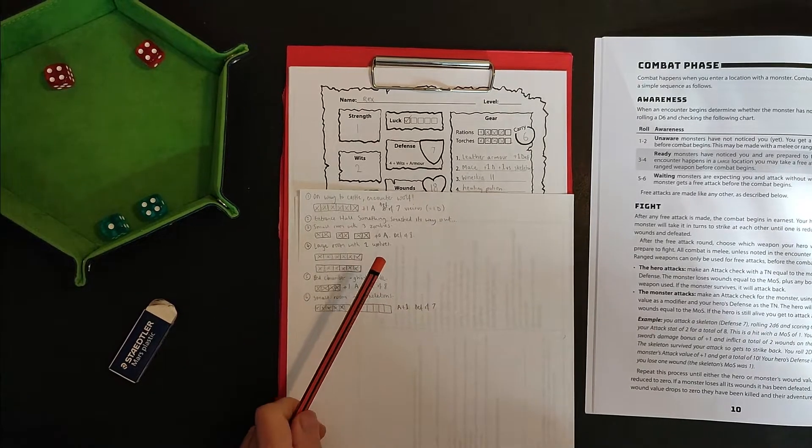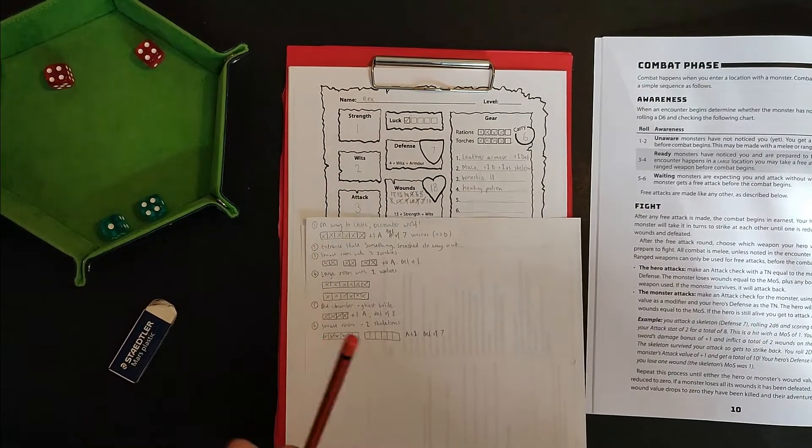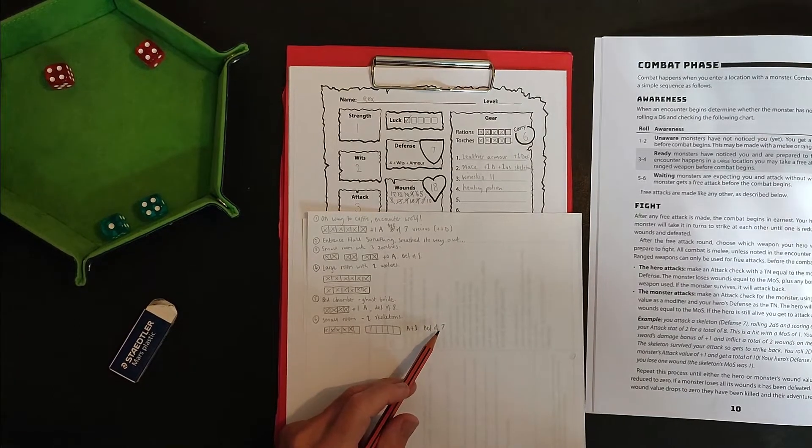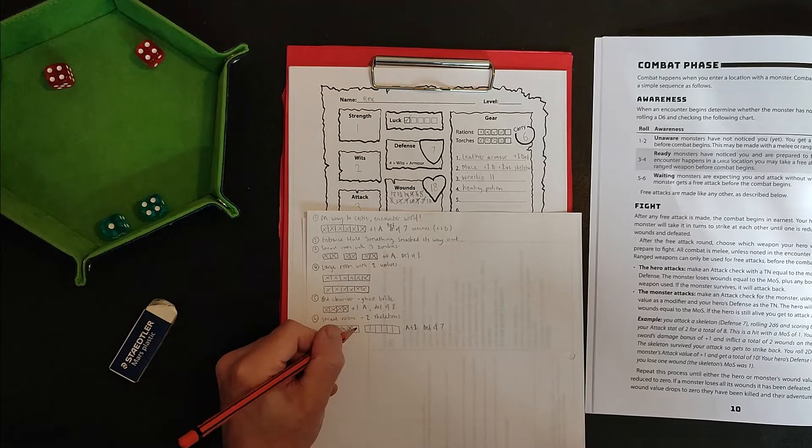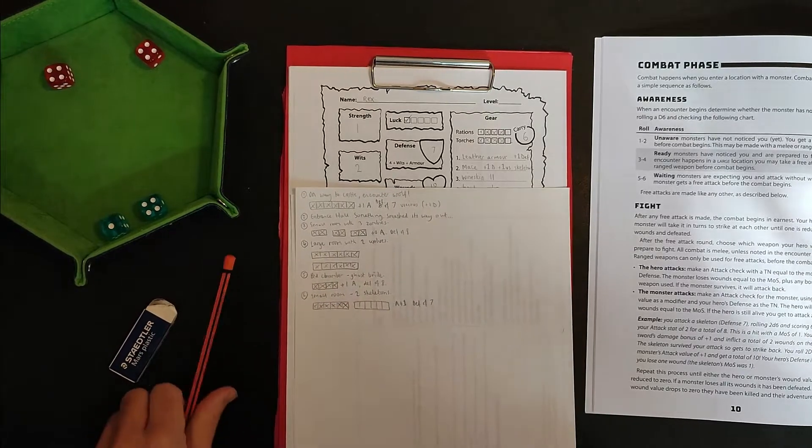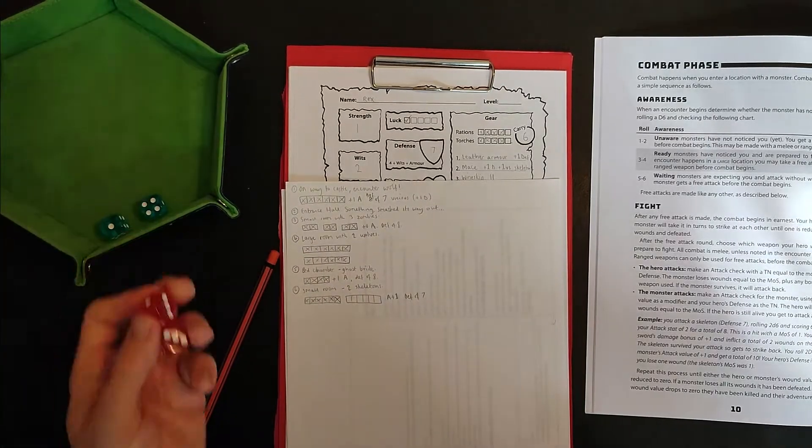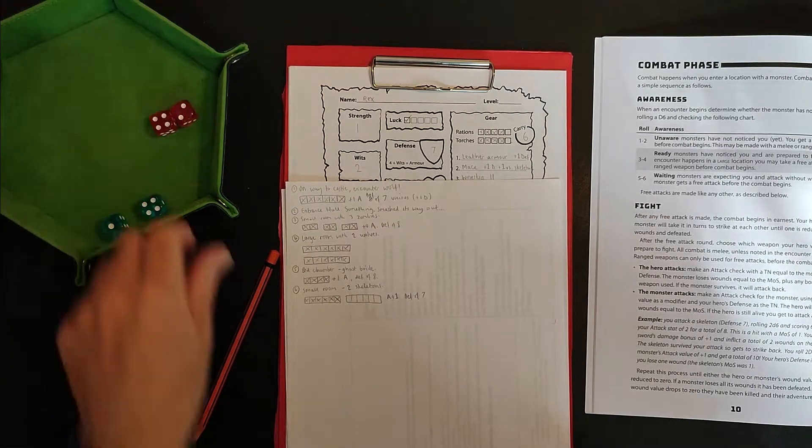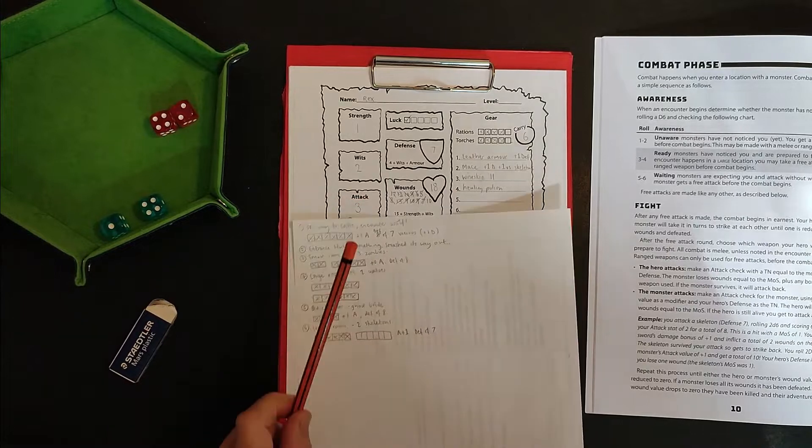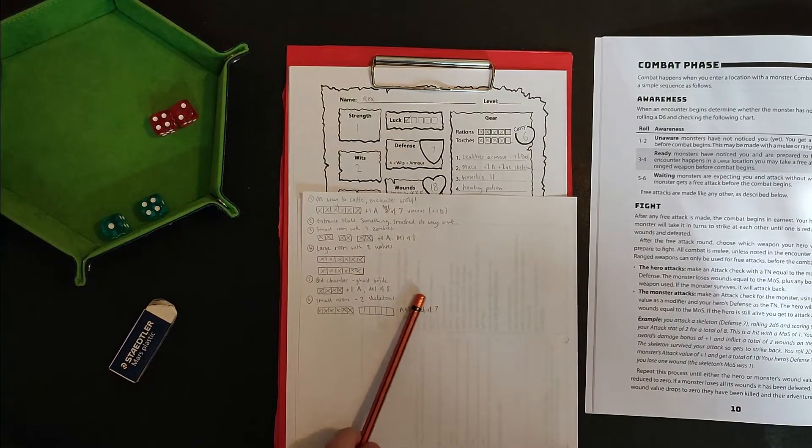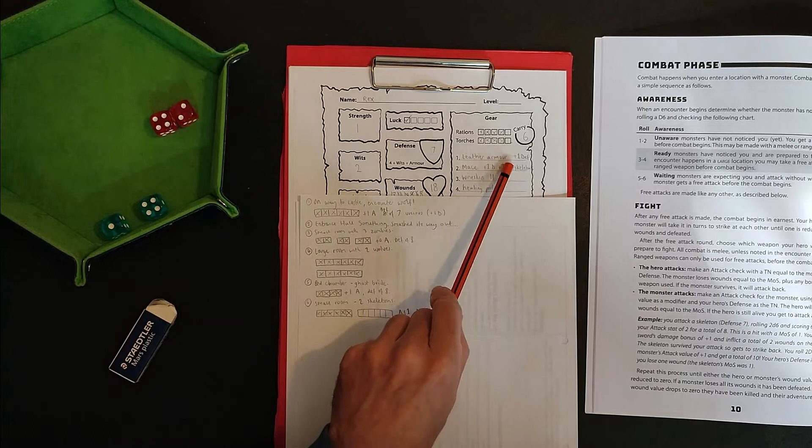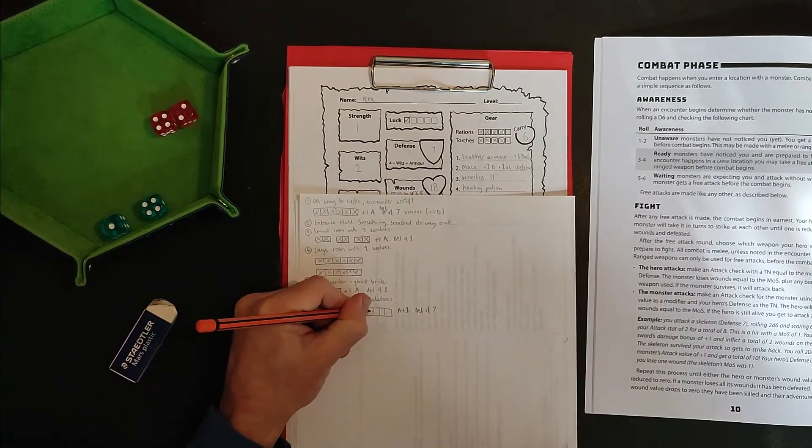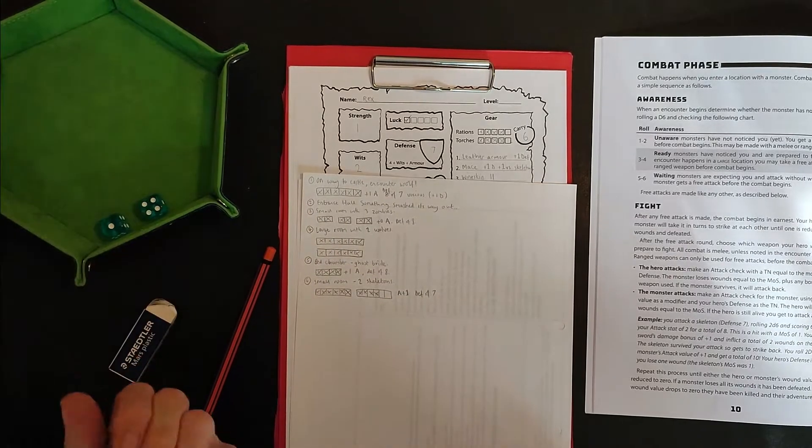Okay, back to the start and me attacking. It's a bit better. Eight, nine, 10, 11, and the defense of seven. So I've comfortably defeated the first skeleton. Now I can move on to attacking the second skeleton. Six, seven, eight, nine, which gives me a margin of success of two, to which I add two for my mace. Four. One, two, three, four. Didn't kill the skeleton. Gets to attack me back.